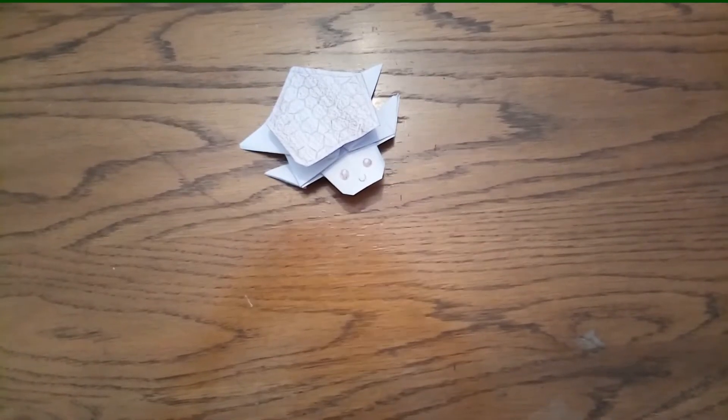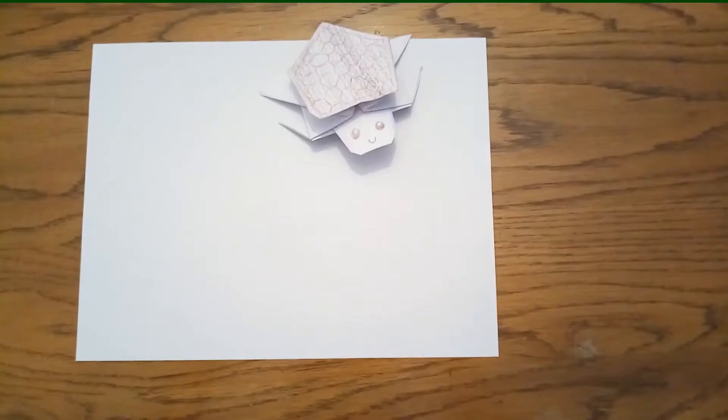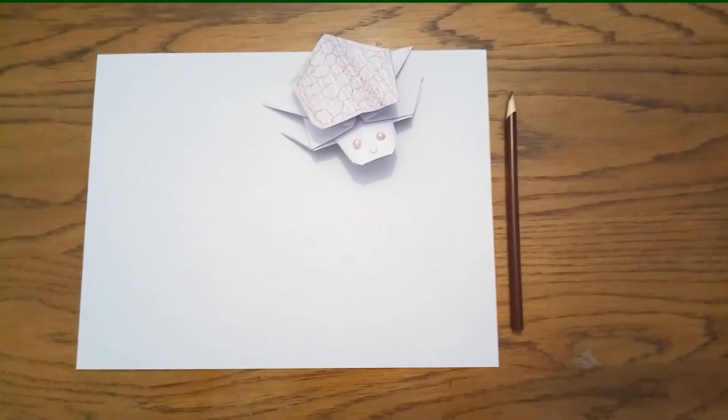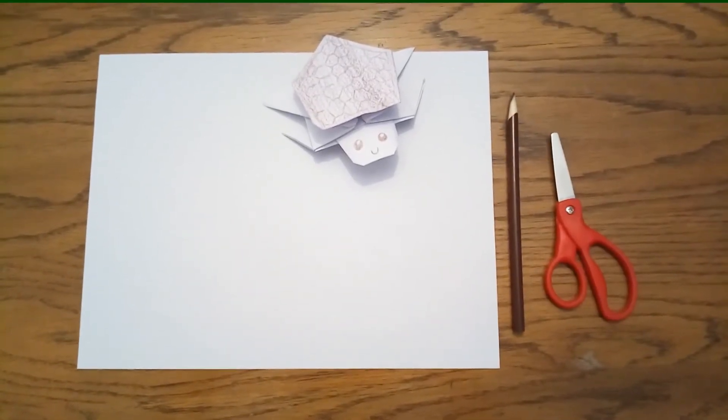To make this cute little origami desert tortoise you're going to need a couple of things. You'll need a piece of paper, a colored pencil, and finally some scissors.